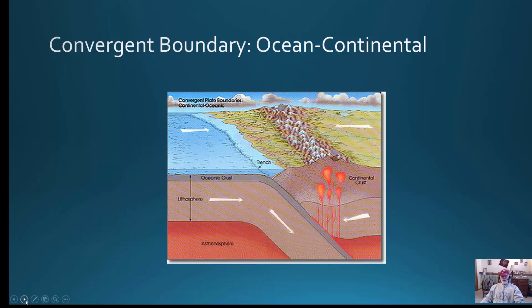As you graphed the Aleutian Islands, it was a fairly steep angle of subduction, so the volcanoes are very close to the boundary. We looked at the Cascade Range in North America, where the angle of subduction was not quite as steep, so the volcanic mountain range was farther inland. The steepness of subduction depends upon the density of the subducting oceanic plate.